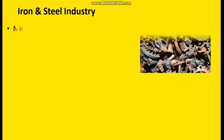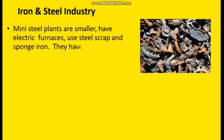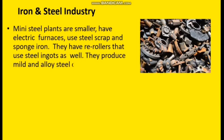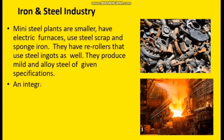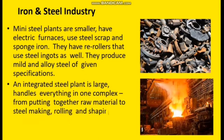There are two types of steel plants. Mini steel plants are smaller, have electric furnaces, use steel scrap and sponge iron, and have re-rollers that use steel ingots as well; they produce mild and alloy steel of given specifications. Integrated steel plants are large and handle everything in one complex — from putting together raw material to steel making, rolling and shaping.